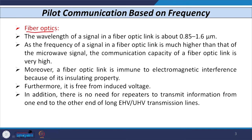Next is fiber optic communication. The wavelength of a fiber optic link is from 0.85 to 1.6 micrometers. Since the frequency of a fiber optic signal is much higher compared to microwave, radio, and earlier types of communication, the communication capacity of a fiber optic link is very high — that is a very important advantage.